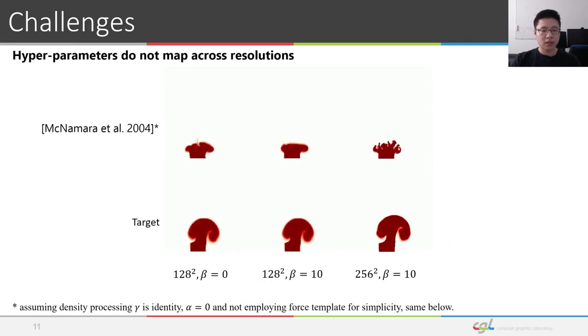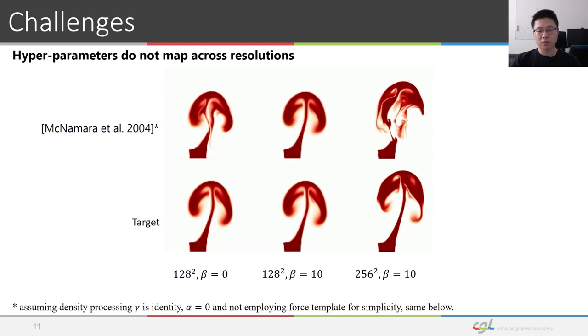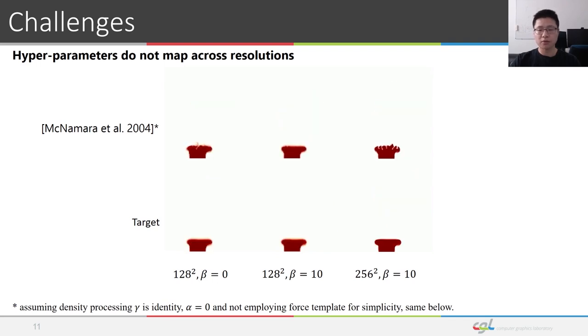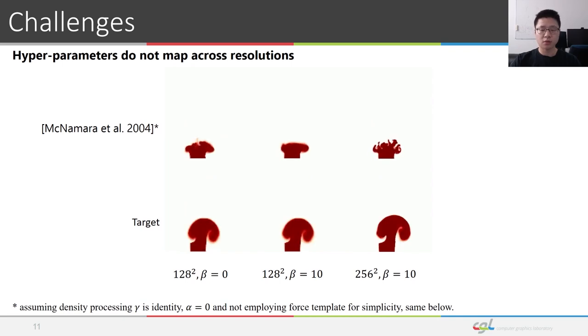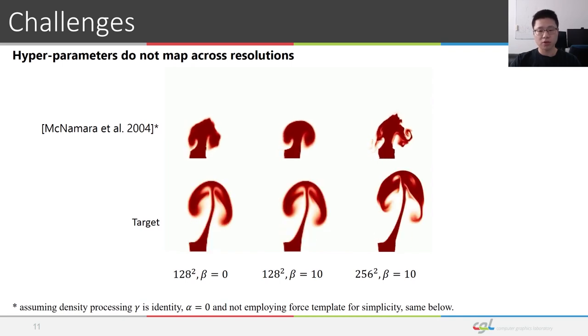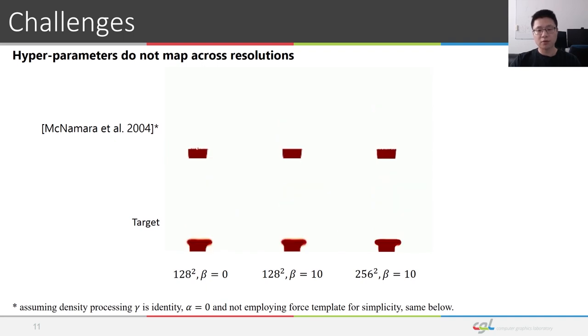Additionally, a set of hyperparameters that are tuned for lower resolutions will often not map to high resolutions. This sequence shows that increasing the regularization weight, beta, helps with the optimization in 128 squared to converge to keyframe targets. But the same beta fails to make optimization converge in 256 squared.